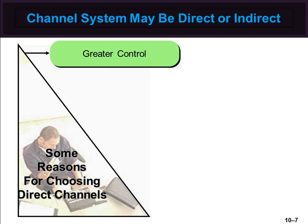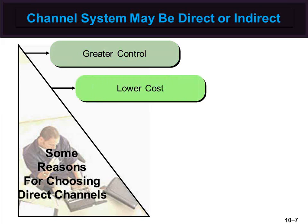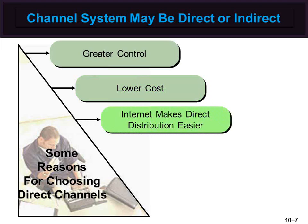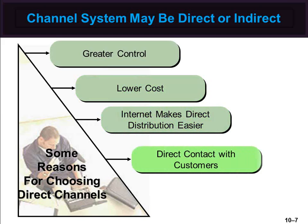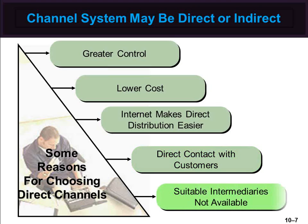Why might a firm want to use direct distribution? One reason is to get better control over the whole marketing job. They might be able to serve target customers at a lower cost. Also, wholesalers and retailers with different objectives may not meet the firm's needs. The internet makes direct distribution easier for many firms. A firm having direct contact with customers is more aware of changes in customer attitudes. Making adjustments is often easier and faster because intermediaries are not involved. Sometimes, suitable intermediaries are not available or will not cooperate.